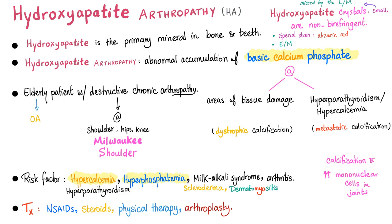Use a special stain called alizarin red. An exam question might describe an elderly woman with painful shoulder, destructive arthropathy, and hypercalcemia due to hyperparathyroidism. X-ray shows calcification; arthrocentesis shows macrophages; nothing is seen on light microscopy, but with the special stain, crystals appear red and bulky. The diagnosis: hydroxyapatite arthropathy — pseudo-pseudogout. Crystal name: basic calcium phosphate. Treatment: non-steroidals, steroidals, physical therapy, and in severe cases, arthroplasty.